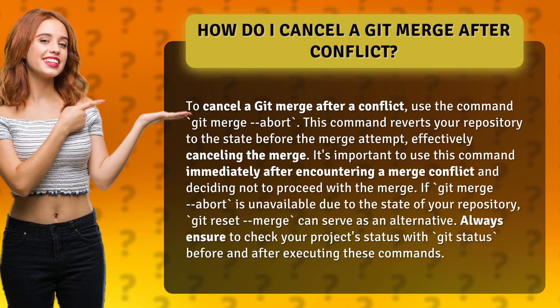It's important to use this command immediately after encountering a merge conflict and deciding not to proceed with the merge. If git merge --abort is unavailable due to the state of your repository, git reset --merge can serve as an alternative. Always ensure to check your project status with git status before and after executing these commands.